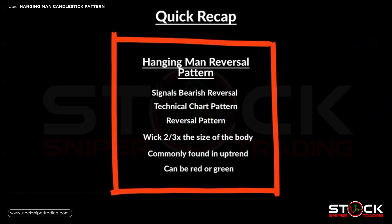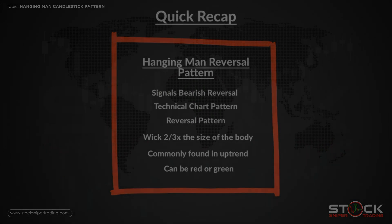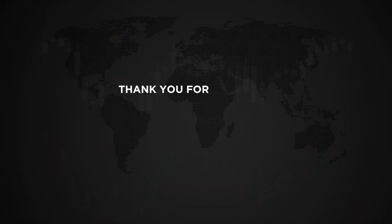A quick recap: the hanging man reversal candlestick pattern is seen as a reversal pattern where it signals a bearish reversal from a bullish uptrend. It is a technical chart pattern. The long lower wick is two to three times the size of the body. It is commonly found in an uptrend where we are looking to reverse to a downtrend. The hanging man candlestick can be red or green; however, if it is a red body it suggests that it is more bearish in nature. We hope you enjoyed this tutorial on the hanging man candlestick pattern, and on our next tutorial we will introduce the doji candlestick.